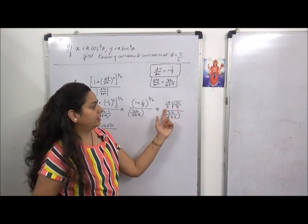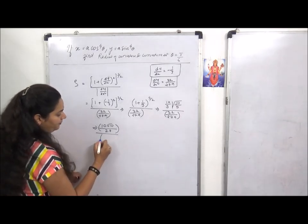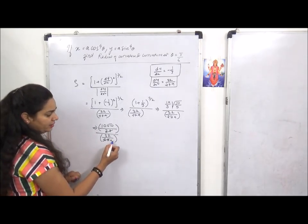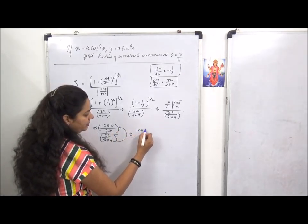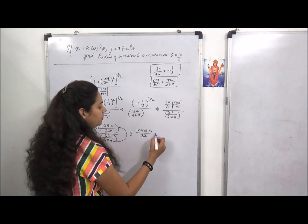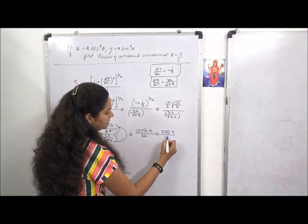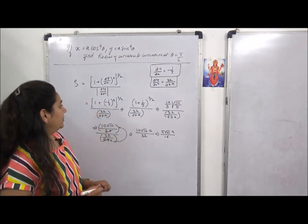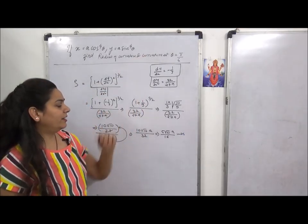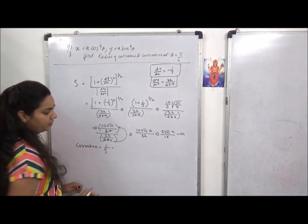You should just keep in mind - any value to power 3 by 2 means write it once inside the root and once outside the root. If any value has power 3 by 2, write it once inside root, once outside root. This way simplification becomes easy. Now this gives 10 root 10 upon - since root 9 is 3, 9 becomes 27 - upon 32 upon 27a. The 27 cancels, a goes to numerator by reciprocal, giving 10 root 10a upon 32. Both 10 and 32 divide by 2, so 5 root 10a upon 16 is our final answer for radius of curvature.